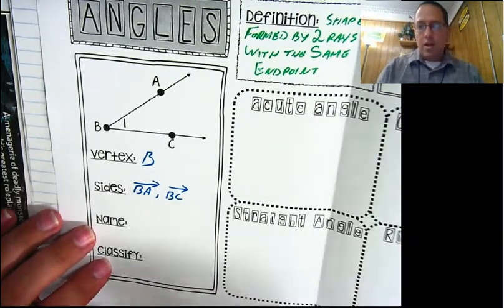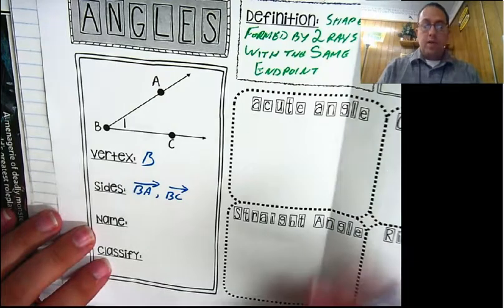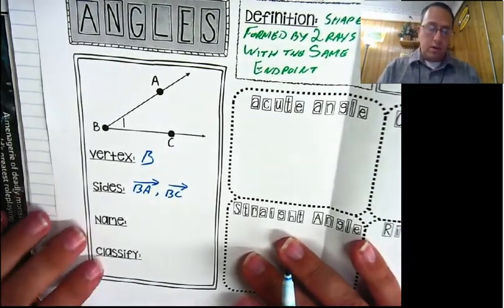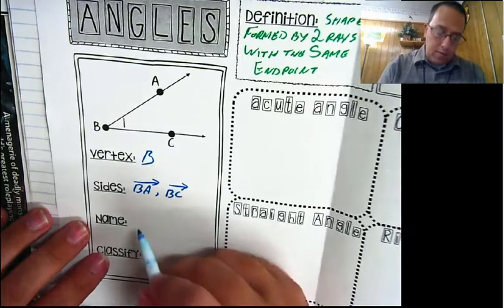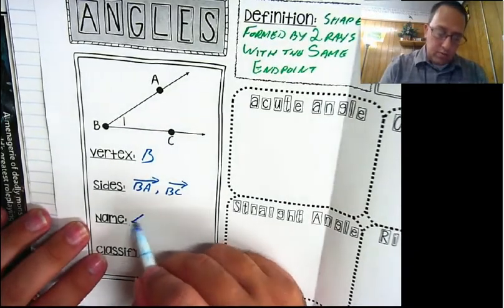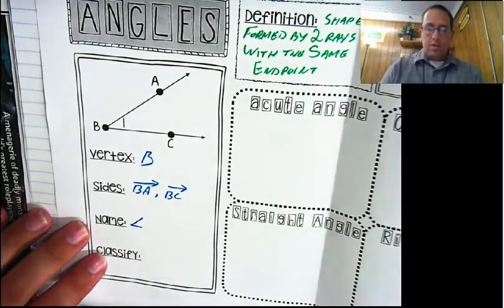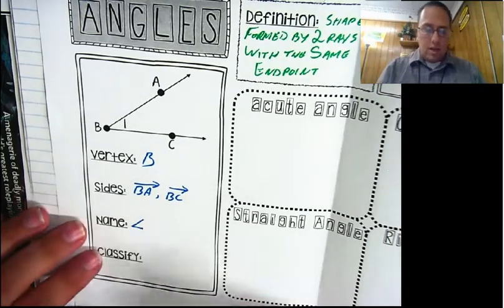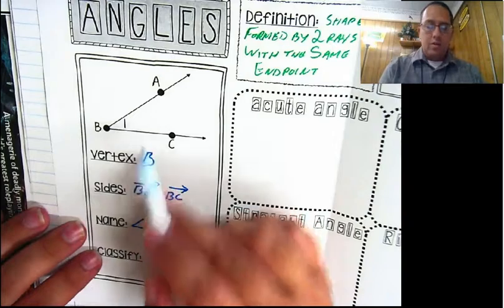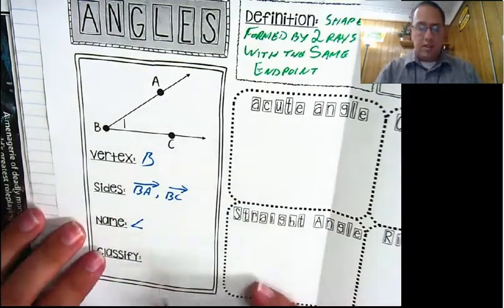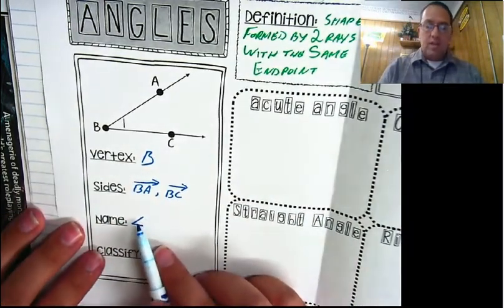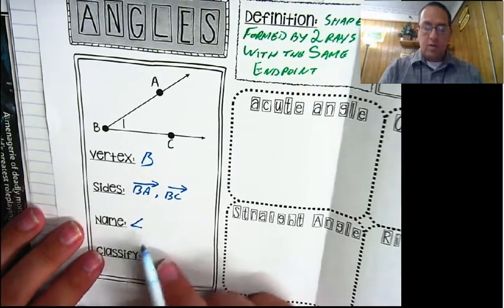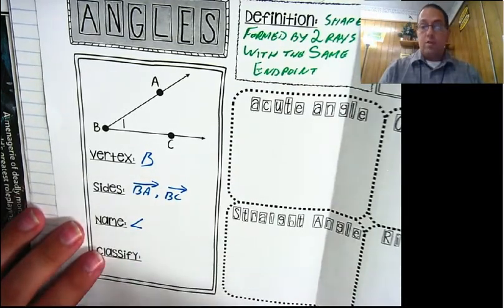Now the question is, how do we name this angle? We've got to be able to name it so we know we're talking about this angle, not some other angle. When we name an angle, we use a symbol - because we like symbols. This symbol here that looks like an angle is read as 'angle.' It doesn't matter how wide the angle is or what direction it's facing; we always use this symbol. It looks kind of like an L that's leaning over, but it always looks the same.